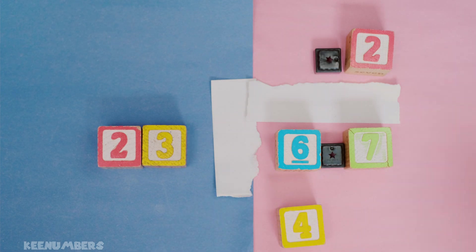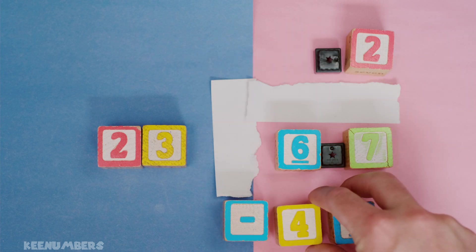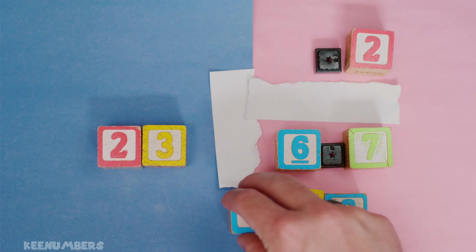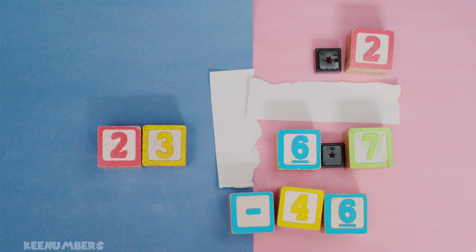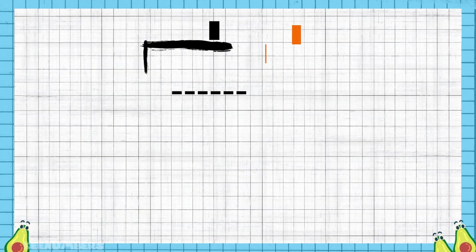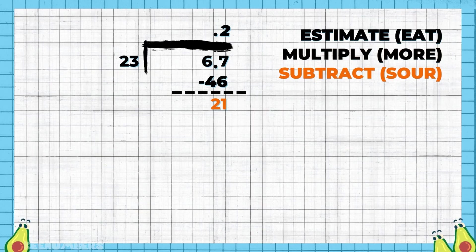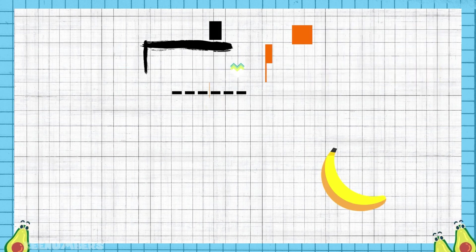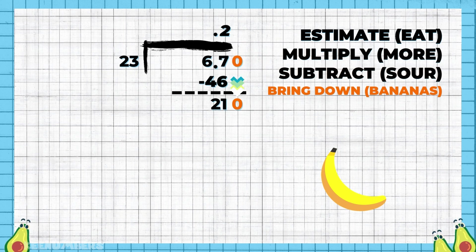Then you're going to subtract, and what's left over? 21. And 21 won't be able to be divided by 23. Oh no, what do we do? It's going to be approximately. You've got the subtraction step - the difference between 67 and 46 is 21. Just ignore that decimal for now because you already lined up your decimals, so you can just press on with eating more sour bananas.